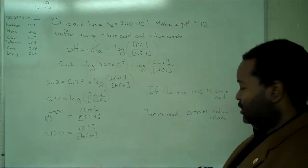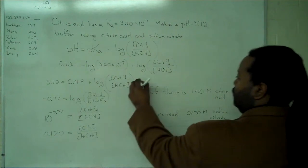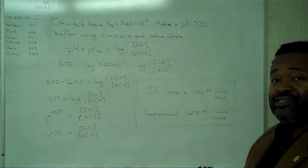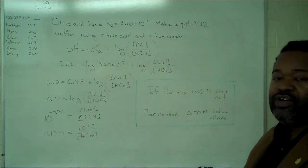And so with this conclusion, we can create a buffer of citric acid and sodium citrate that will maintain a pH of 5.72.